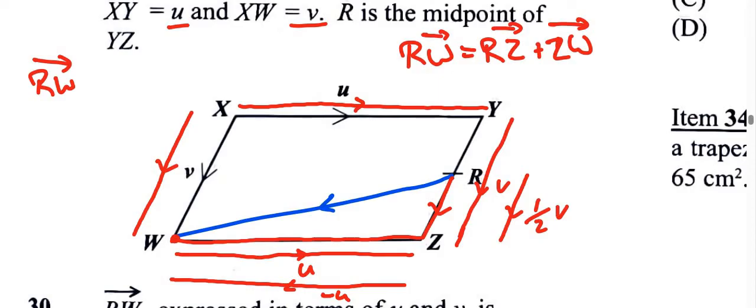So we're going to go from r to z, which is going to be a half v. We already established that. And going from z to w, that will be negative u. Of course, half v plus negative u. The plus and minus, or plus and negative, we can write that as minus. So it's half v minus u.